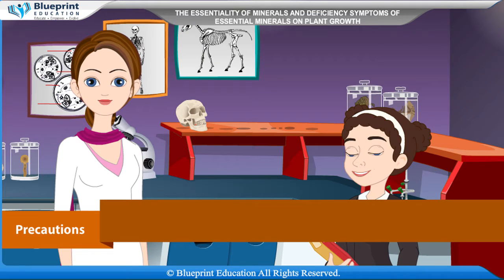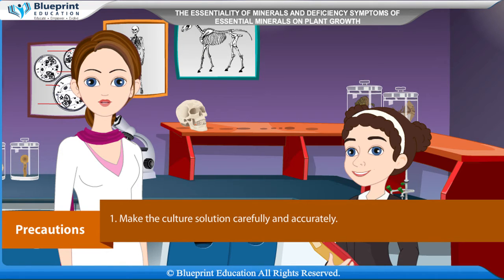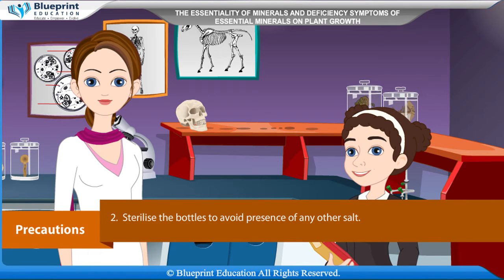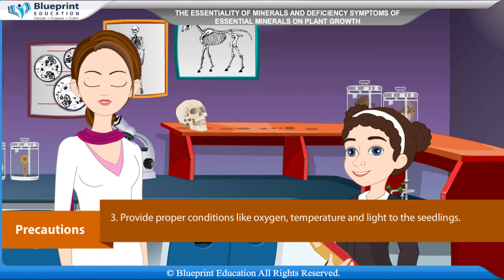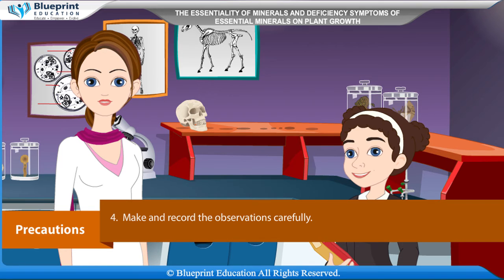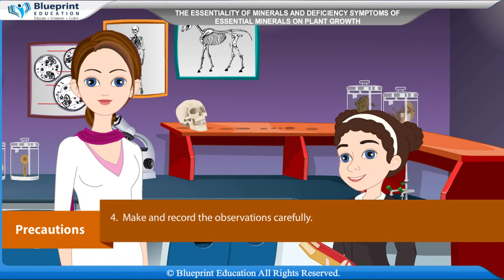Precautions: Make the culture solution carefully and accurately. Sterilize the bottles to avoid the presence of any other salt. Provide proper conditions like oxygen, temperature, and light to the seedlings. Make and record the observations carefully.